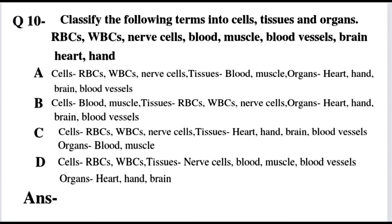Question number 10: Classify the following terms into cells, tissues, and organs. Blood and muscles fall into the tissue category. Heart, hand, brain, and blood vessels fall into the organs category. So Option A is the right answer.